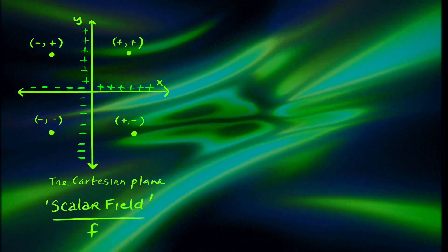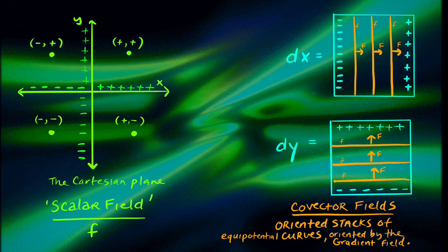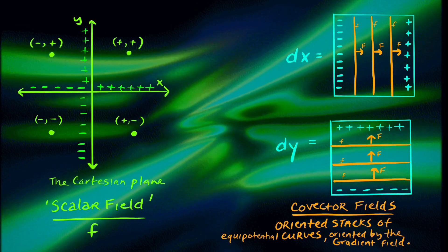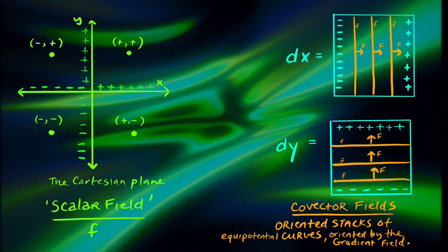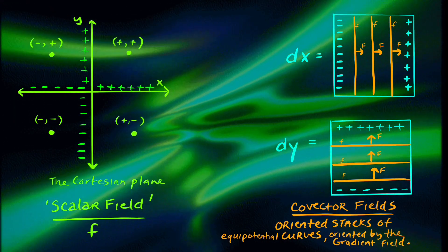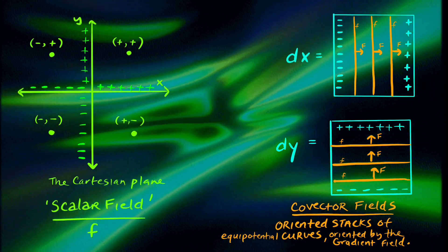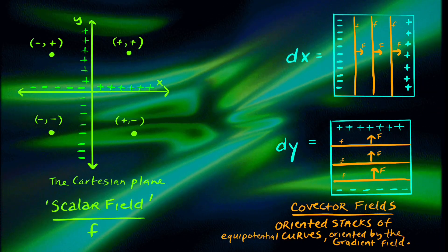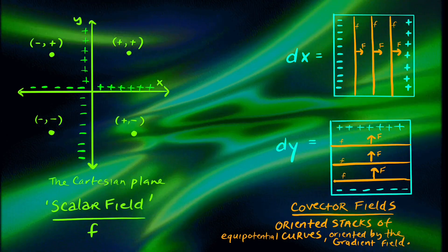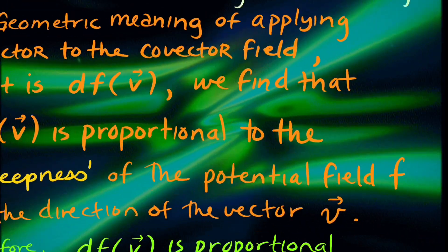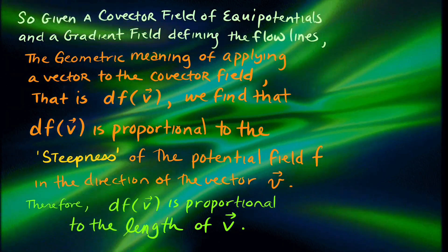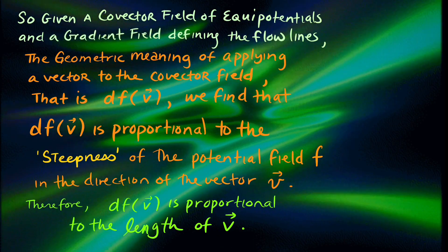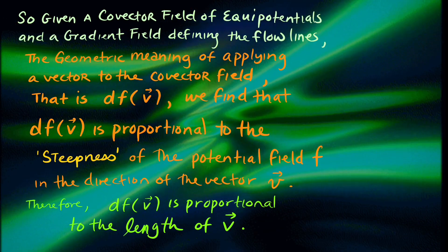Consider the Cartesian plane as a scalar field. If we move in the dx direction, the lines x1, x2, x3 and so on, those are our level set curves in the dx direction, moving from negative to positive, oriented in the direction of the gradient field F. Similarly for y, it moves from bottom to top, negative to positive. As a complete field, the scalar field would move from a negative negative direction to a positive positive direction. The covector field of equipotentials and the gradient field defining the flow lines gives us a geometry where applying a vector to a covector field is proportional to the steepness of the potential field itself.